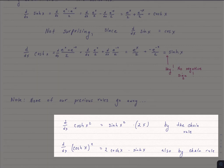squared times the derivative of x squared, which is 2x. Likewise, if I did the derivative of hyperbolic cosine of x squared, that would be two times hyperbolic cosine times the derivative of hyperbolic cosine, which is hyperbolic sine.